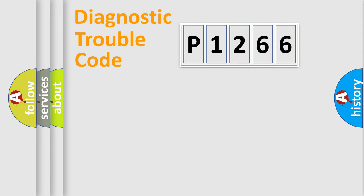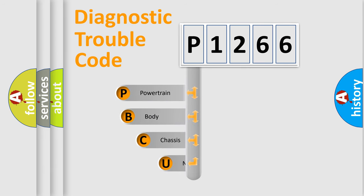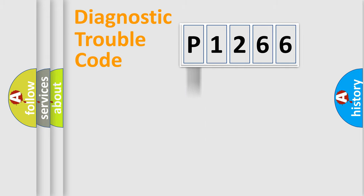Let's do this. First, let's look at the history of diagnostic fault code composition according to the OBD2 protocol, which is unified for all automakers since 2000. We divide the electric system of an automobile into four basic units: Powertrain, Body, Chassis, and Network.